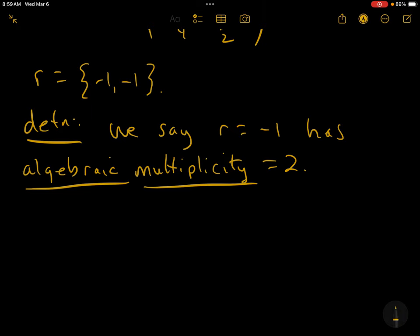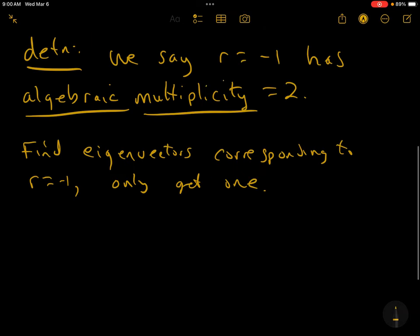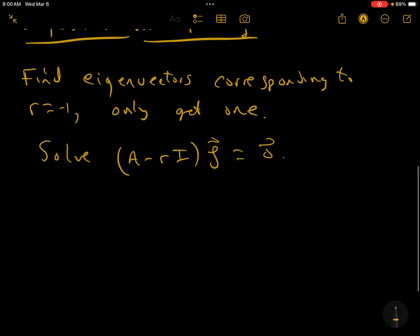When you find the eigenvectors corresponding to R equals minus 1 in this case, we only get 1. We solve A minus R I times zeta equals 0. And after solving that system, we get the eigenvector 2, 1. I won't bore you with the details. This is the only eigenvector that corresponds to R equals minus 1.